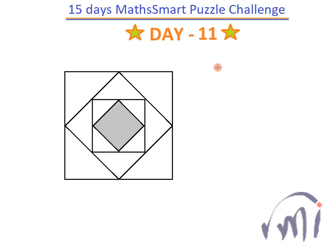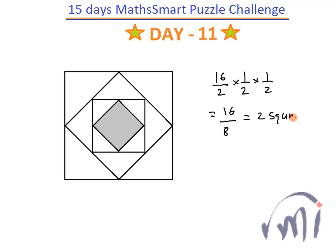Since the area of the outer square was 16 square units, the area of the first inner square is 16 divided by 2. The next square is half of that, divided by 2 again, and finally the area of the shaded square is half of that — 16 divided by 8, which is 2 square units. This shaded region is obtained by folding the original square 3 times. In general, if you have a square of area A and fold it n times in this fashion, the area of the final smallest square will be A divided by 2 to the power n.